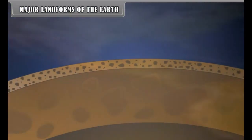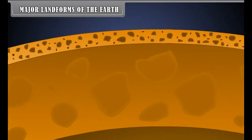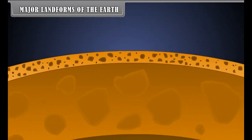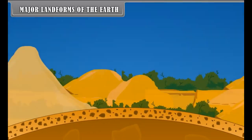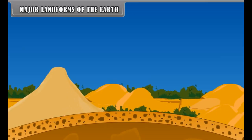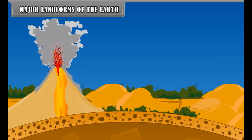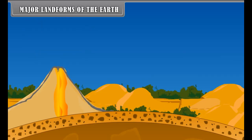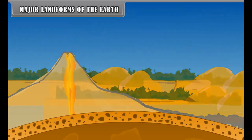Major Landforms of the Earth. The crust of the Earth is made up of rocks. This crust is neither permanent nor stable. Due to the tectonic forces, the Earth's crust is continuously changing, but the change is very slow. Earthquakes and volcanic eruptions bring abrupt changes on the Earth's surface. All these changes on the Earth's crust give birth to different types of landforms.